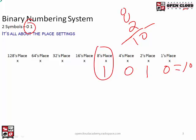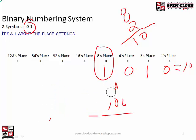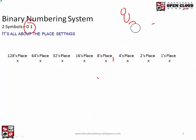What do I mean by equivalent? If I draw ten circles, I can express this quantity two ways. In decimal, that's the number ten. In binary, that's 1, 0, 1, 0. These are two different ways of expressing the same quantity. I can say I've drawn 1010 circles or I've drawn ten circles — it's the exact same amount, just different numbering systems.